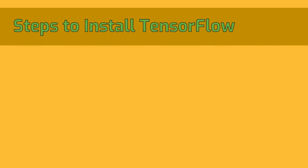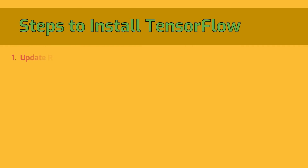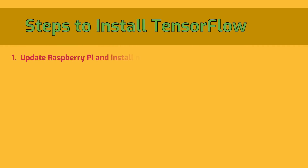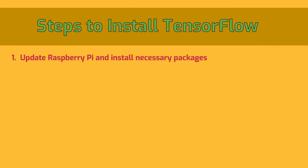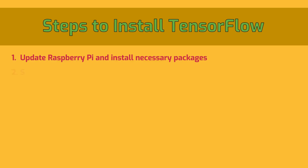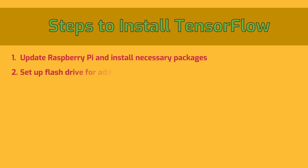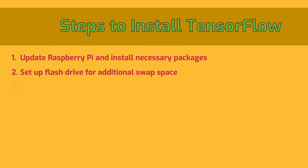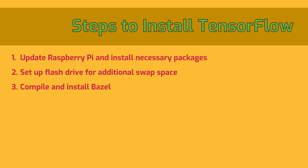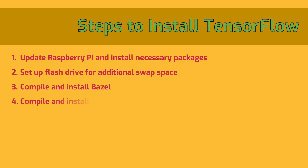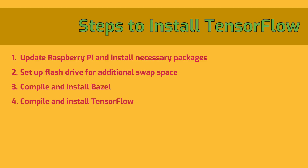There are 5 steps total. 1. Update the Raspberry Pi and install necessary packages. 2. Set up the flash drive as additional swap memory space. 3. Compile and install Bazel. 4. Compile and install TensorFlow. 5. Test your installation. Okay, let's do this!